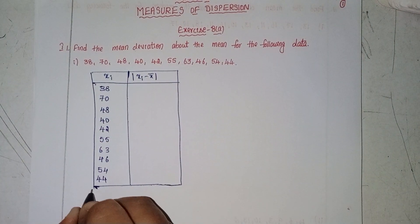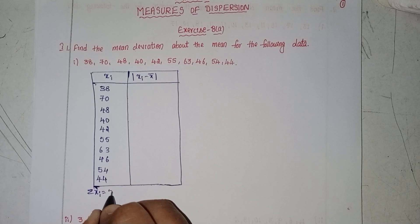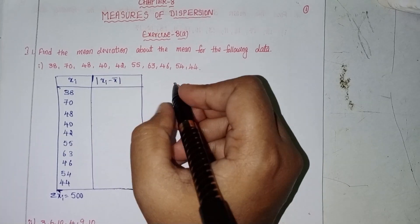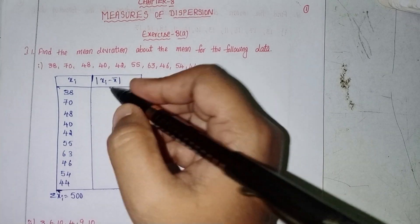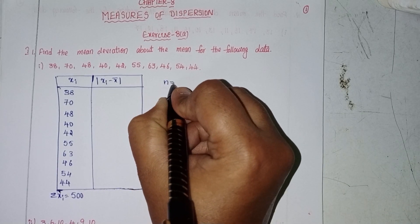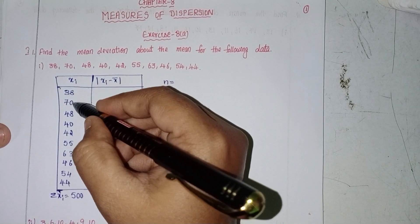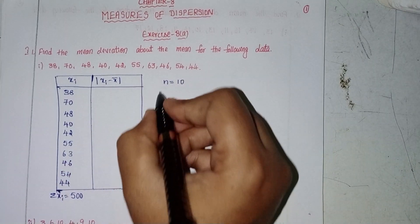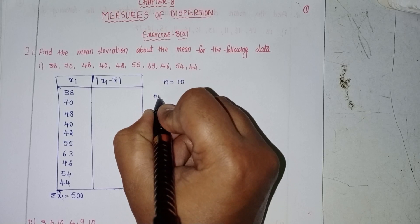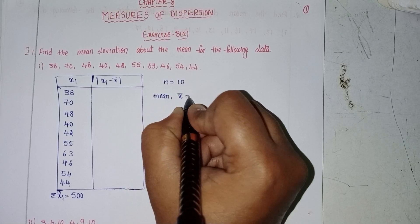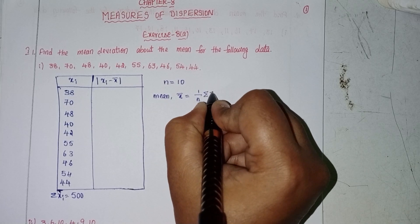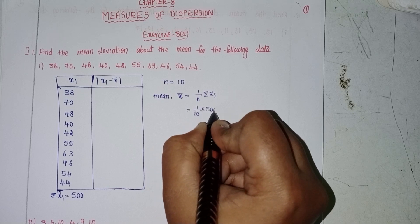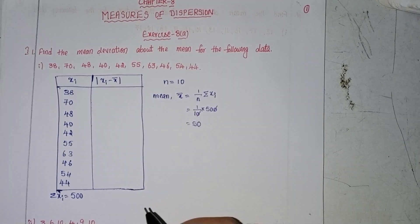Summation of xi: we have 10 observations. Mean, x̄ = (1/n) × summation xi = (1/10) × 500. The zeros cancel, so the mean is 50.